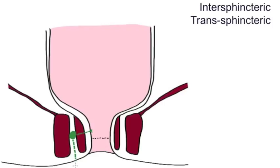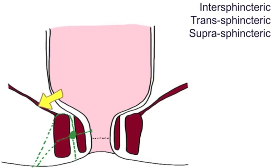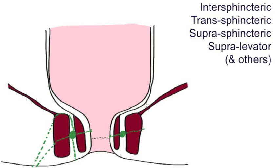It may be transphincteric. It may be suprasphincteric. And if we remind ourselves of the levator ani, the pelvic floor, a fistula can be supralevator.